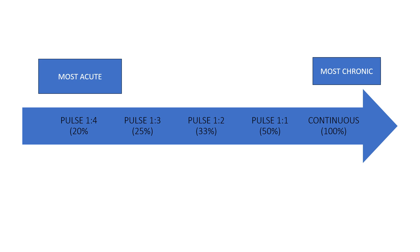It is suggested that pulse ratios of one to four are best suited to acute injuries — the more acute the injury, the lower the ratio. You also need to be aware that we do not use continuous ultrasound around bony areas, even if the injury is chronic.